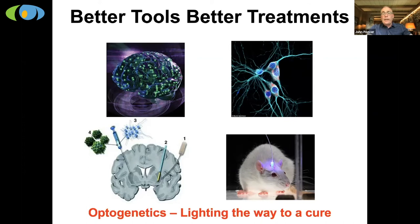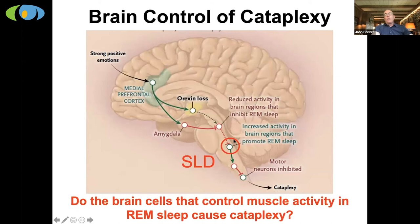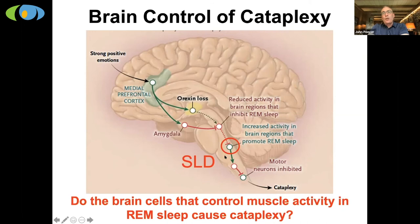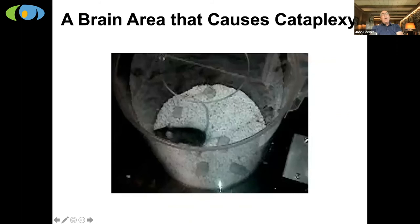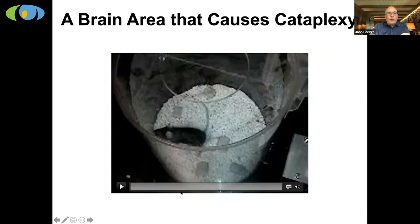Optogenetics — opto for using light to turn cells on or off, and genetics for being able to genetically target a very particular cell group in the brain — allows us the remarkable ability to turn cells off and on in the same time frame that they would normally occur under normal conditions. We used this tool to turn on SLD cells and see what happens to cataplexy in mice with narcolepsy.